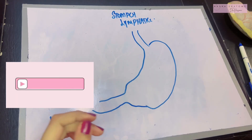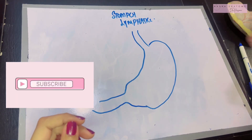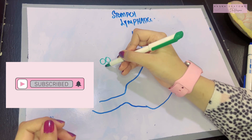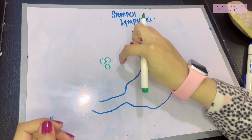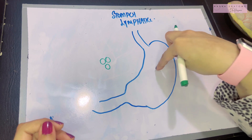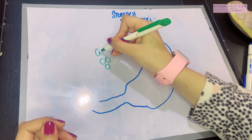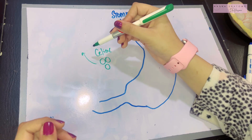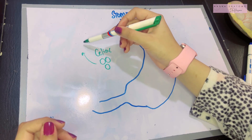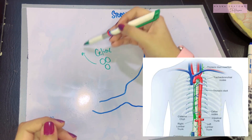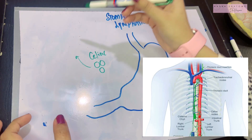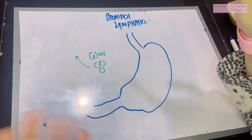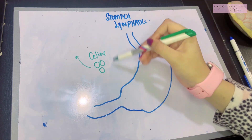For the lymphatic supply of the stomach, remember one basic rule: there are nodes called the celiac nodes, and these are the central lymph nodes where all the lymph of the stomach has eventually got to reach. From the celiac nodes, the lymph goes to the intestinal lymph trunk and the cisterna chyli, then the thoracic duct begins, and from there lymphatics end up in the venous system.